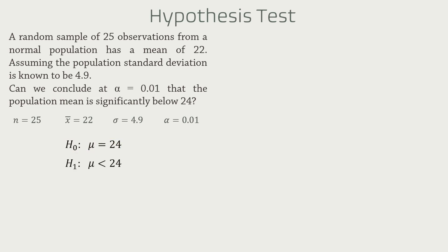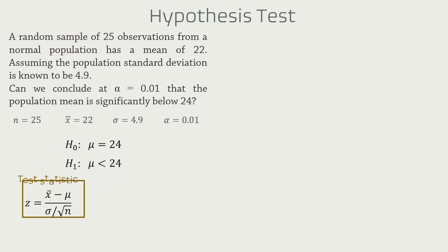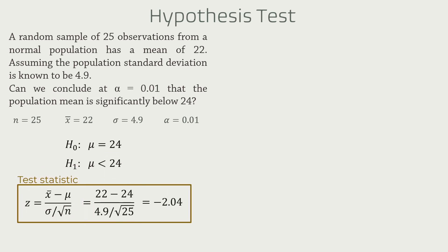Now, since we assume that the population standard deviation sigma is known, we will use the z-test statistic. And plugging in the values, we have a z-stat of negative 2.04.